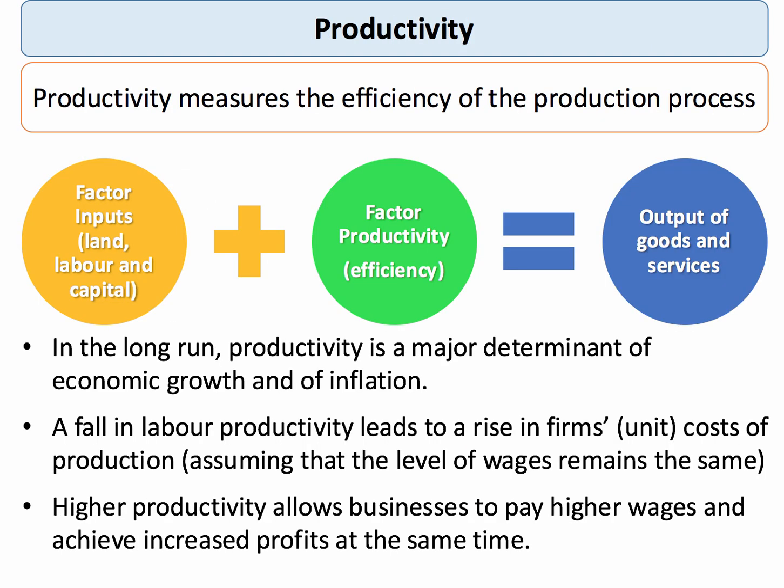So productivity is a measure of efficiency. If we take our factor inputs — land, labour and capital — and we add in the productivity of those factors of production, then we can generate a certain output of goods and services.